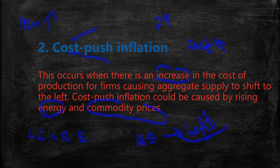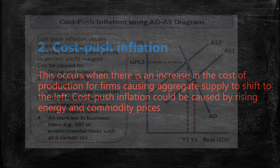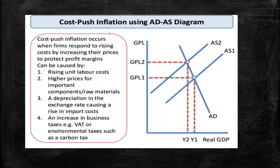This is the graph of cost-push inflation. When firms respond to rising costs by increasing their prices, it is done to protect their profit margins. For example, when the cost of production — such as raw materials — increases for a firm, they raise prices accordingly.